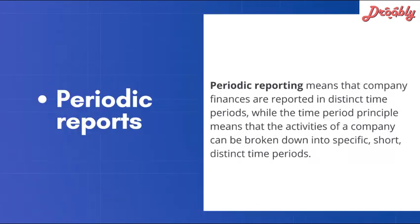Moving on to the first type: periodic reports. Suppose you have to report to your investor on a certain period of time — it could be daily, weekly, monthly, or quarterly. You may have heard of Q1, Q2, Q3, Q4 — those are the four quarters of the year. Periodic reporting means that company finances are reported in distinct time periods, while the time period principle means activities of a company can be broken down into specific short time periods.